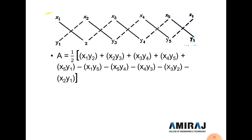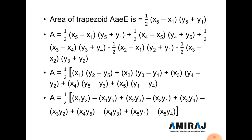In simple terms, write x1, x2, x3, x4 on the upper side and y1, y2, y3 on the lower side with starting and ending points the same. Then Area = (1/2) × [(x1·y2 + x2·y3 + x3·y4 + x4·y5 + x5·y1) − (x1·y5 + x5·y4 + x4·y3 + x3·y2 + x2·y1)]. This is the simple method to solve coordinate method problems.